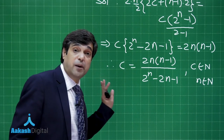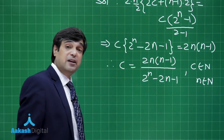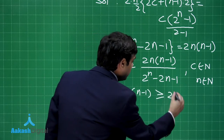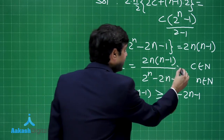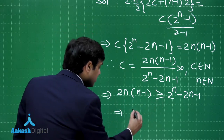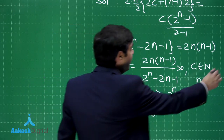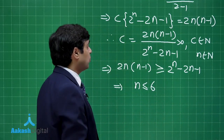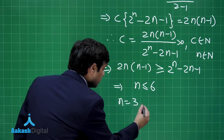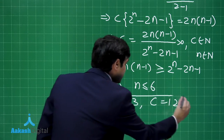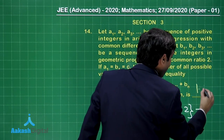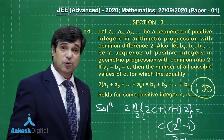Since C is a natural number, this term must be greater than 0. Also, the numerator must be greater than or equal to the denominator to get a natural number. When you simplify, you observe that N must be less than or equal to 6. Just putting the values for N, you observe that when N equals 3, C equals 12 is the only possibility. So how many such values are we getting? Just one. The correct answer for this question is 1.00.